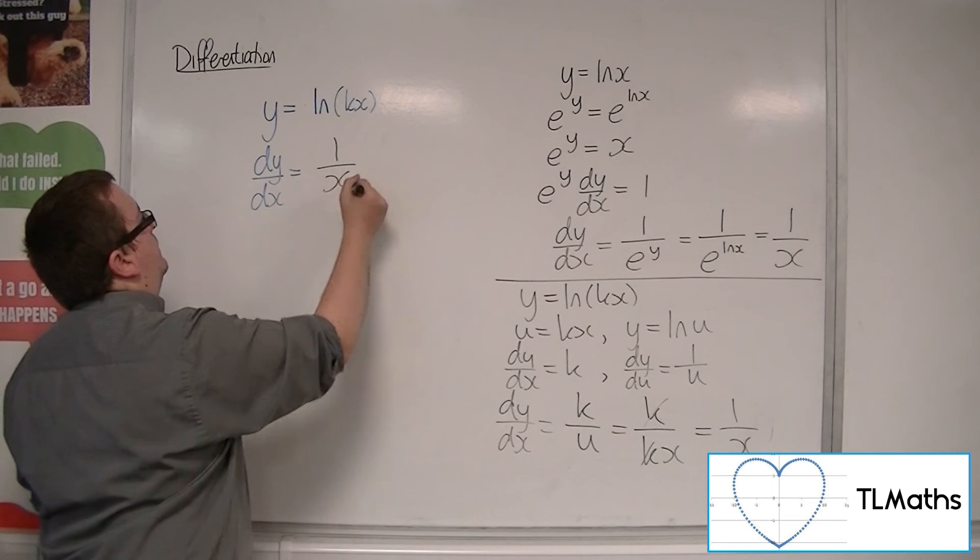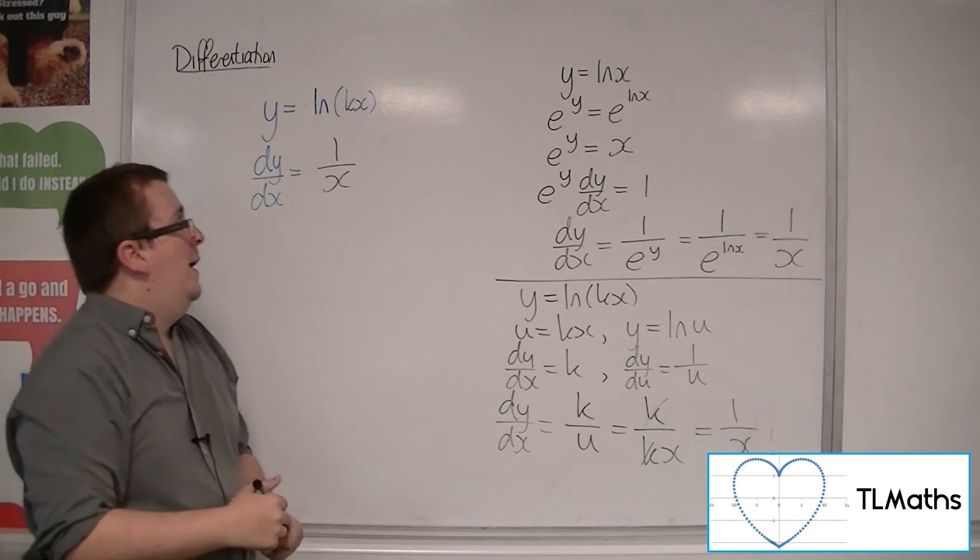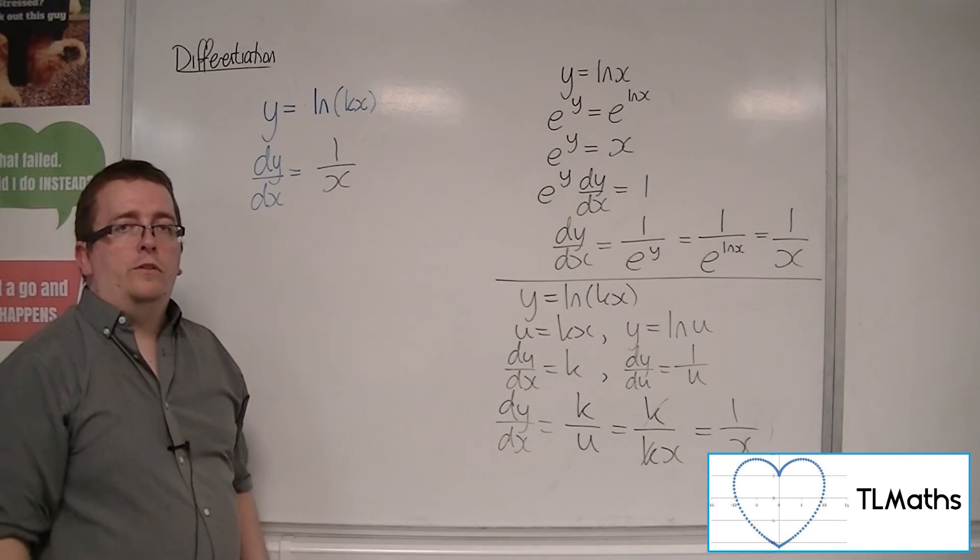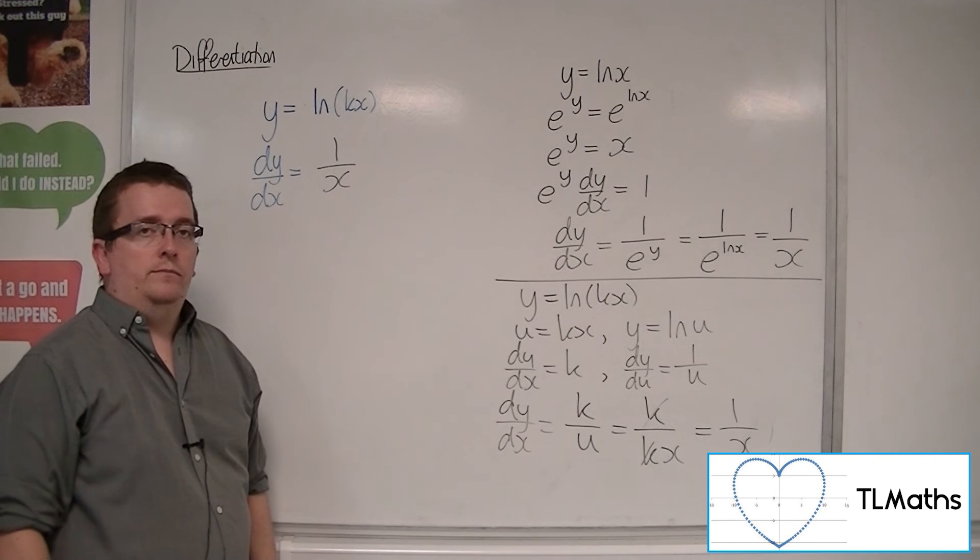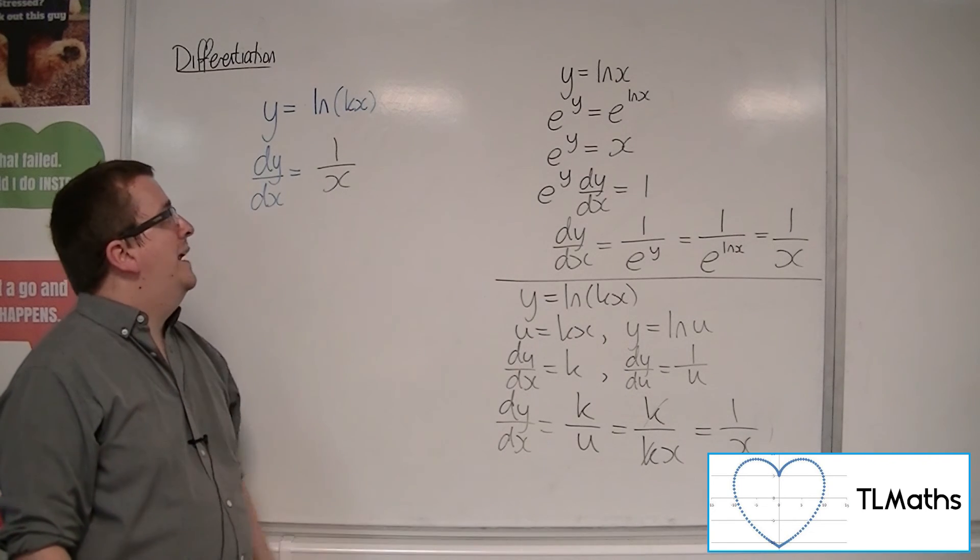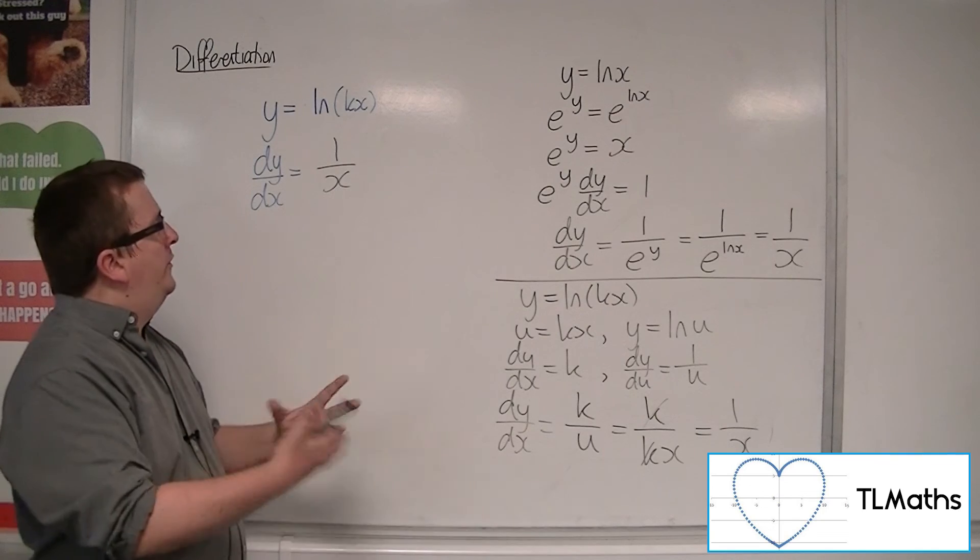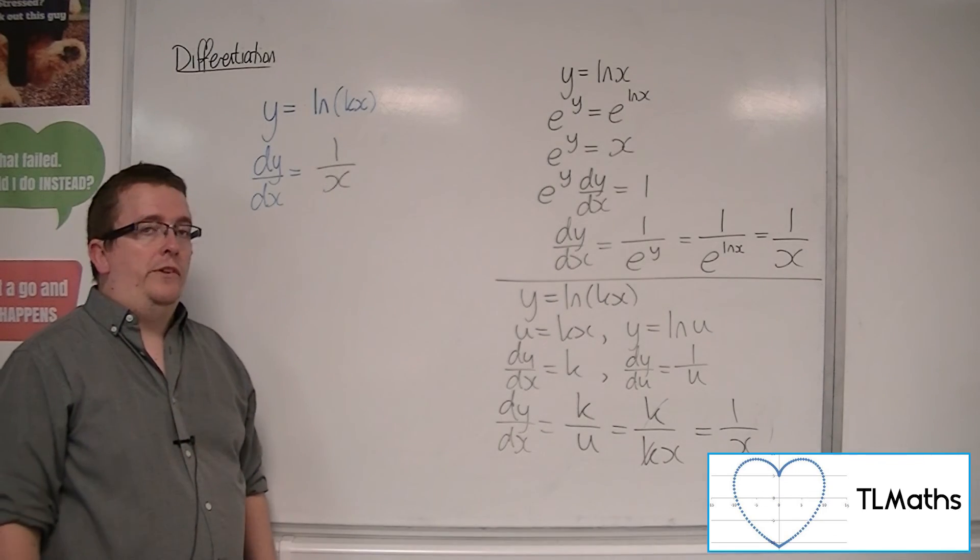So interestingly, ln of 2x, or ln of 3x, or ln of 5x, or ln of a million x, will differentiate to 1 over x, regardless of that value of k, as long as k is a constant greater than 0.